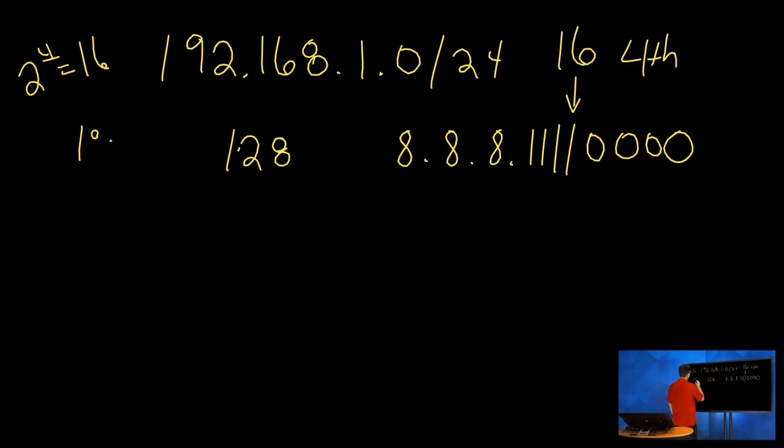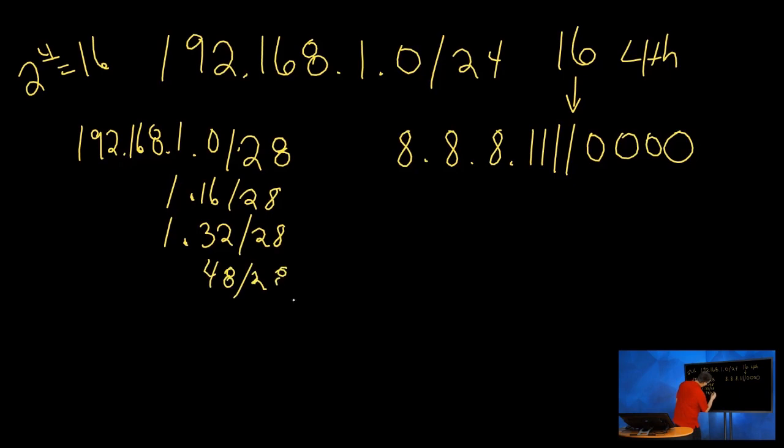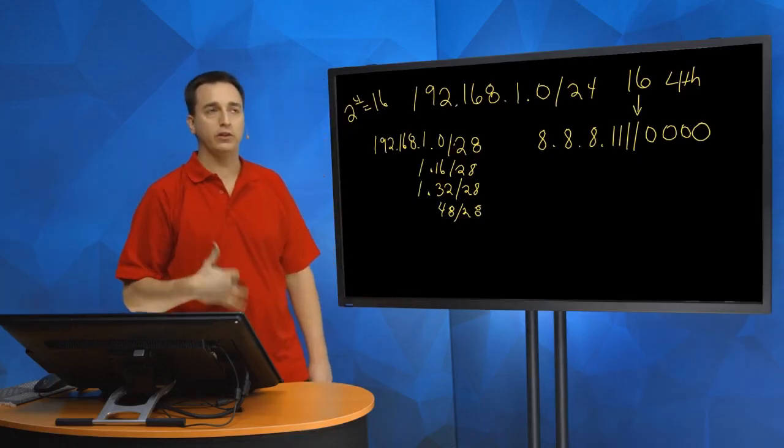We're counting by 16 in the fourth this time. Going back to our original address, we had 192.168.1.0, so there's our first subnet, that is our very first subnet. We said we're counting by 16 in the fourth, so the next subnet is .16/28, 1.16/28. What's the next subnet? 1 dot, what's 16 plus 16? 32/28, and then 48/28, and so on and so on until we've mapped out our 16 total subnets.